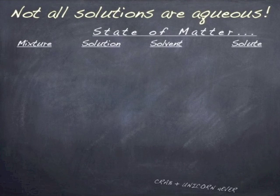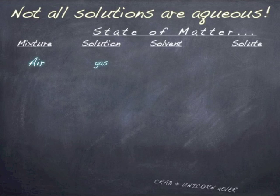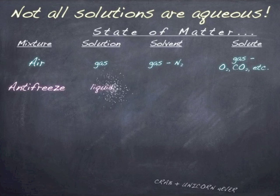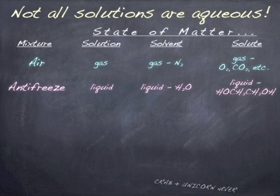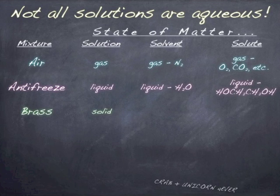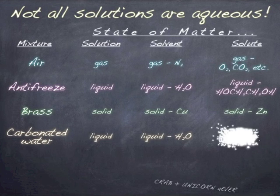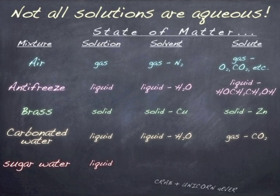Let's run through a couple of examples. Air is a gas solution — the solvent is the homonuclear diatomic nitrogen, and anything else is dissolved in it. Antifreeze is a liquid solution of water and ethylene glycol — don't drink it; it'll taste sweet but will blind you. Brass is a solid solution where there's more copper than zinc. Carbonated water is a liquid with water as the solvent and carbon dioxide as the solute. Sugar water is another obvious example, where the solute is sugar dissolved in liquid water.